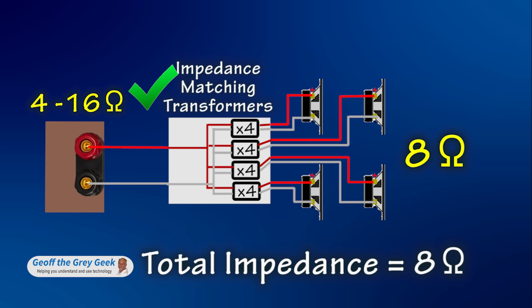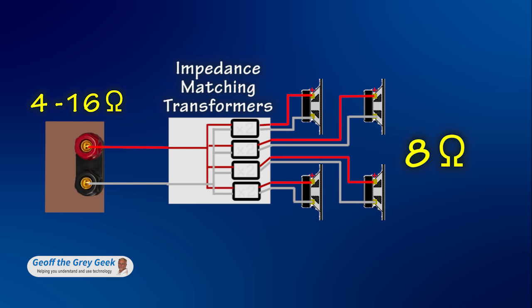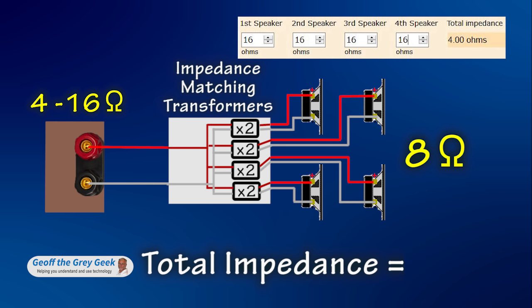With 8 ohm speakers, you could set the multiply to times 2. This would make each of the 8 ohm speakers look like 16 ohms. The calculator tells us 4 16 ohms in parallel equals 4 ohms. No problems.